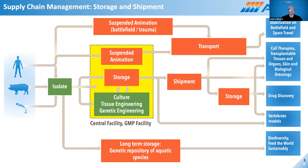We also want to bank skin and biological dressings for mass casualty events — a volcanic eruption in New Zealand saw them run out of skin for patients. We're looking at ways to stabilize trauma and battlefield injury through hibernation approaches. All of these are societal impacts we hope to achieve. The big idea addresses the blue boxes — supply chain management for scaling, storing, shipping, and transporting biomedical products for society.